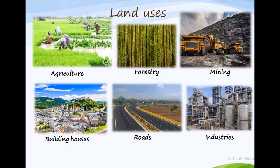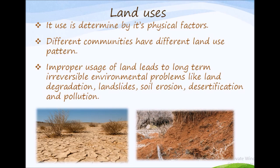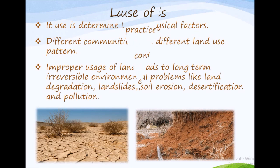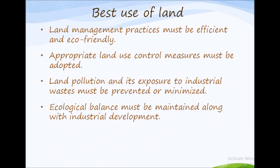But does every country utilize land for all these purposes? Its use is determined by physical factors. Different communities have different land use patterns, which may change with time depending on the stage of development of a community. Sometimes, improper use of land leads to long-term, irreversible environmental problems like land degradation, landslides, soil erosion, desertification, and pollution. To make the best use of our land, land management practices must be efficient and eco-friendly, appropriate land use control measures must be adopted, land pollution and exposure to industrial waste must be prevented or minimized, and ecological balance must be maintained alongside industrial development.